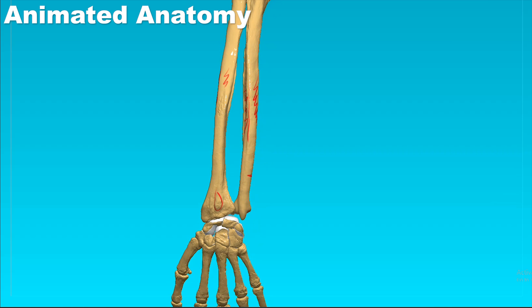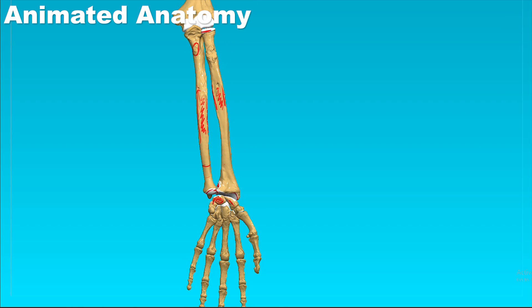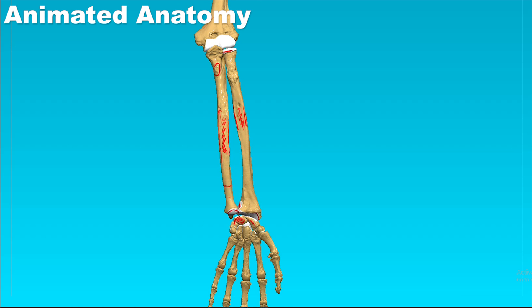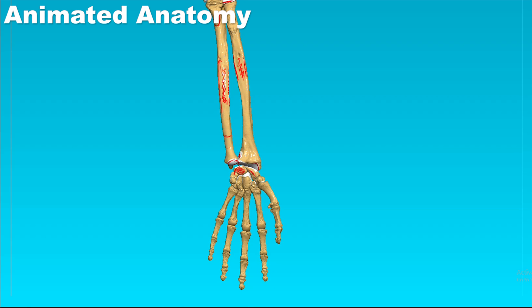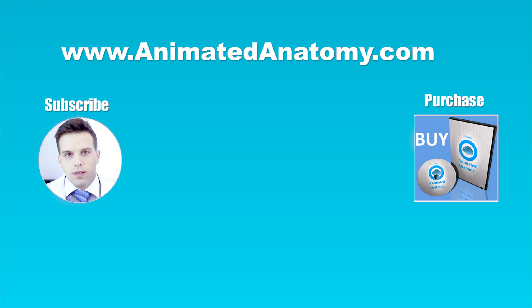Let's not forget they articulate: they articulate with the humerus, and with the lunate, scaphoid, and the articular disc. These lessons come as part of a software called Animated Anatomy, available at animatedanatomy.com.